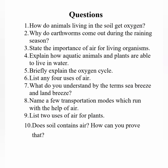Write down the following questions. Question 1: How do animals living in the soil get oxygen? Question 2: Why do earthworms come out during the rainy season? Question 3: State the importance of air for living organisms. Question 4: Explain how aquatic animals and plants are able to live in water. Question 5: Briefly explain the oxygen cycle. Question 6: List any 4 uses of air. Question 7: What do you understand by the terms sea breeze and land breeze? Question 8: Name a few transportation modes which run with the help of air. Question 9: List 2 uses of air for plants. Question 10: Does soil contain air? How can you prove that?